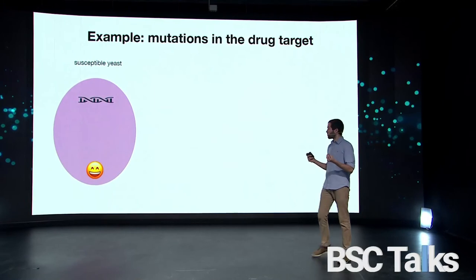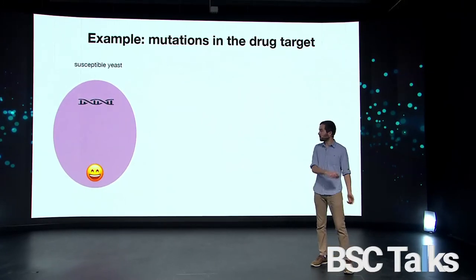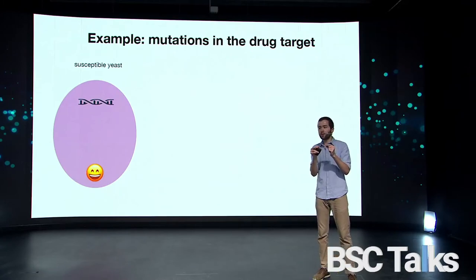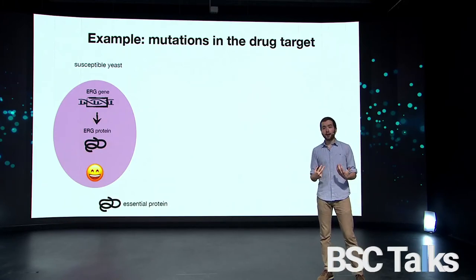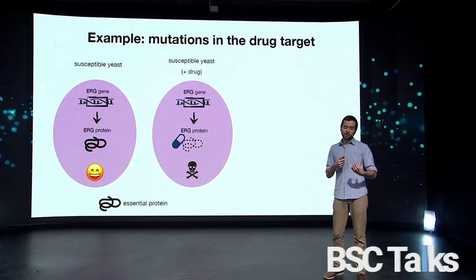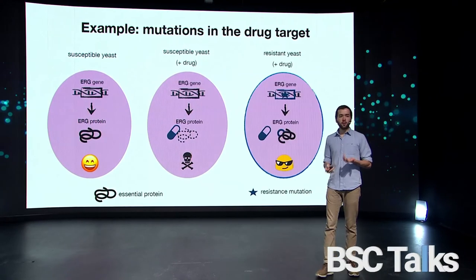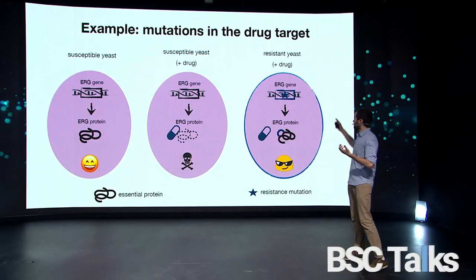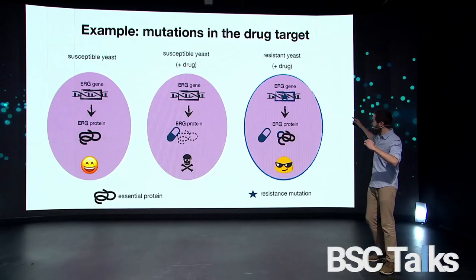I'd like to finish by showing you one example of how a mutation can be related to a resistance mechanism. Imagine this is a susceptible yeast cell — inside the cell there is a genome, and the genome has tiny pieces of functional information we call genes. There is this ERG gene, which encodes a protein essential for yeast survival. One class of drugs binds to this protein and destroys it — that's how they kill the cell. But some resistant yeasts have mutations in this ERG gene that encode a slightly different protein. This protein has a different shape, so the drug cannot bind to it — and that is how one mutation can cause resistance.